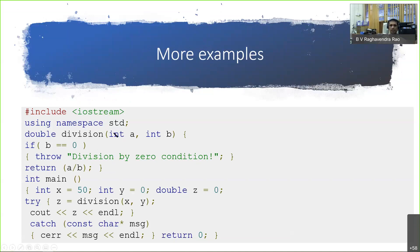Here is another example — a standard division function. You want to check if divide-by-zero is happening. If b equals zero, just throw a parameter — this can be anything; in this case it is a string class object, passing a string for the division-by-zero condition. The corresponding catch mechanism: note the throw is not in a try block here — the try block is wherever you are using the division function. So x is 50, y is something, z equals division(x, y). Then it should throw an exception. This is the try block, then you should have a catch block after that outside main. The catch should expect a character string — the type should match — and it will display the message.